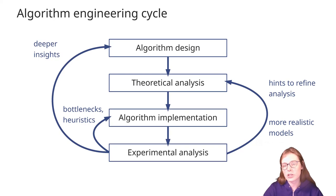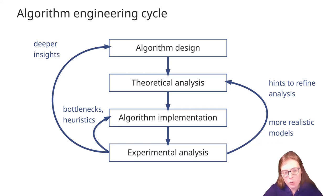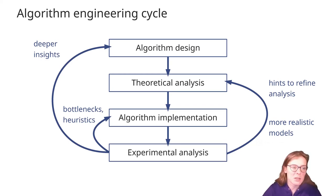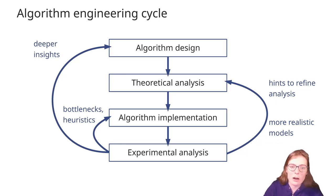In doing so, we may observe some properties of input data that comes from real life, and this can give us insight on how to refine our analysis of the algorithm. We may also encounter some bottlenecks or get some ideas for heuristically improving the performance of our algorithm, and then we will want to go back to re-implement it. Finally, we may also develop some deeper insights and change the design of our algorithm. Repeating this cycle several times iteratively, we can converge on a good solution to a given problem.